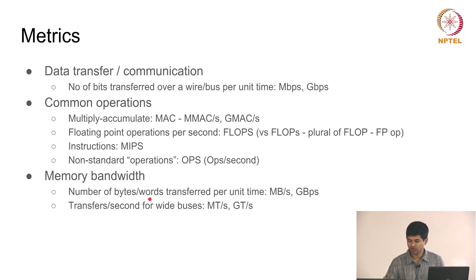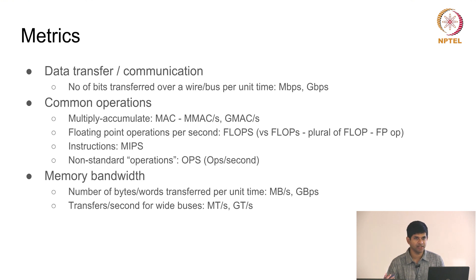Then of course comes memory bandwidth — the number of bytes or words transferred per unit time. This is slightly different from the data transfer rate, which is typically the output of an A-to-D converter being transferred into a machine. For memory bandwidth, it may not be from an external sensor; you are doing computation, your data needs to be fetched from memory, acted upon, and pushed back into memory. Megabytes per second and gigabytes per second are the more common units, because the assumption is you are working with multi-bit data and memory bandwidths are more often described in bytes than bits.